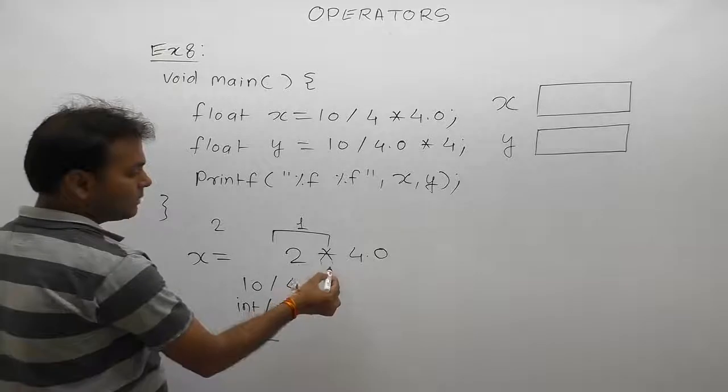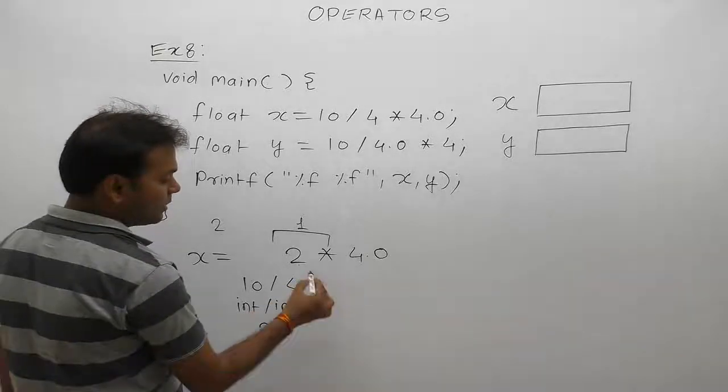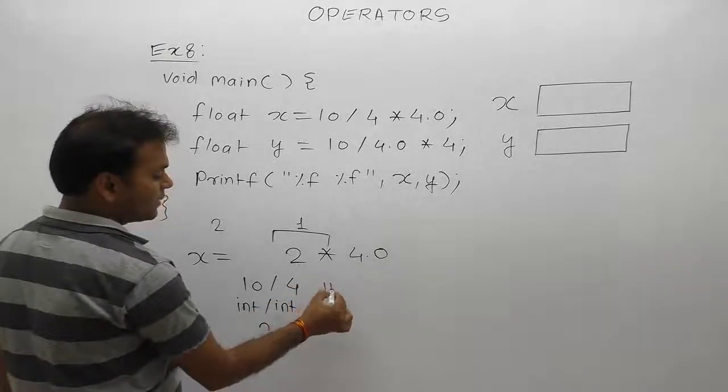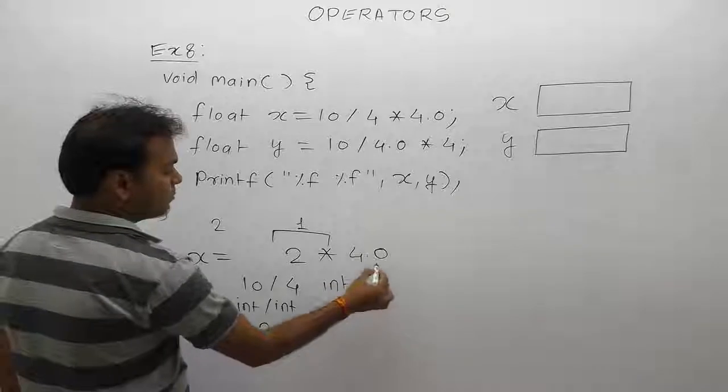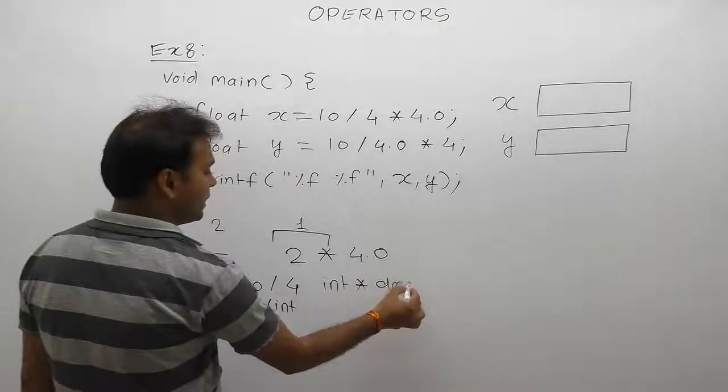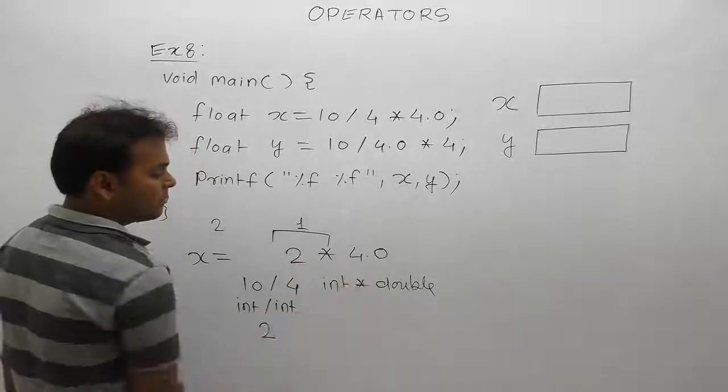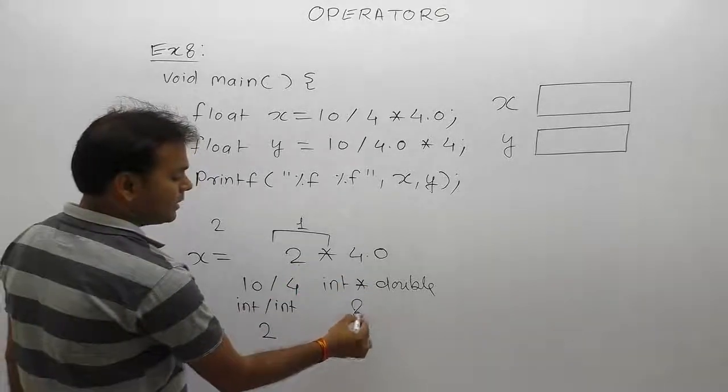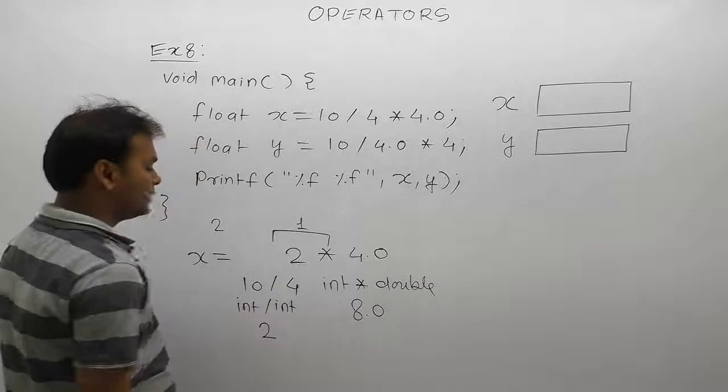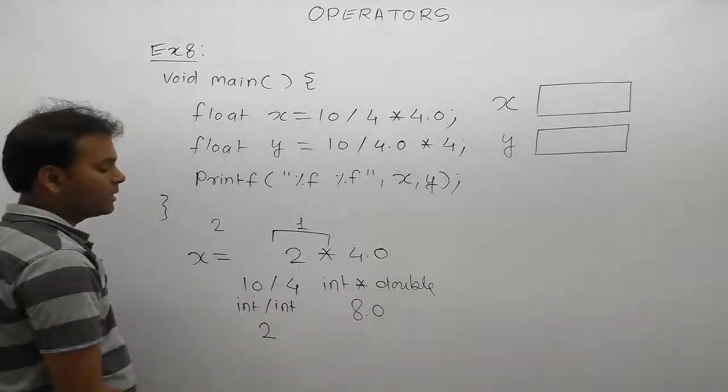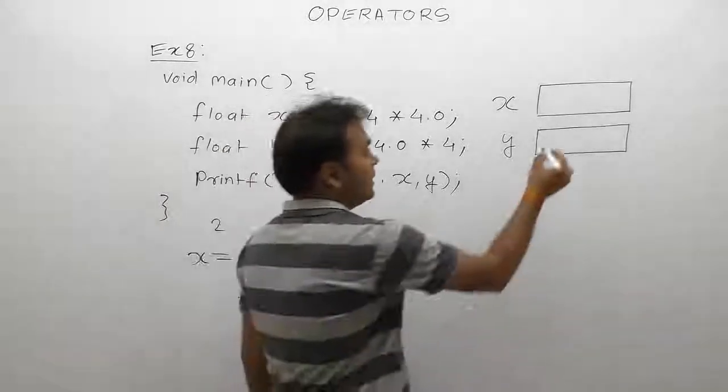We multiply. First operand is 2, which is integer. Multiply by 4.0, which is double. Integer and double result is also double, means 2 multiply by 4 is 8.0. Now 8.0 is assigned to the variable x, so x value printed is 8.0.